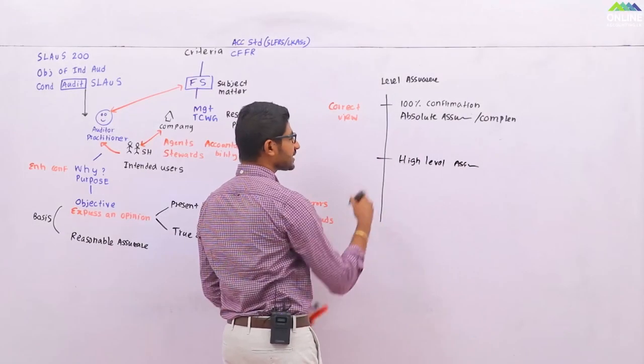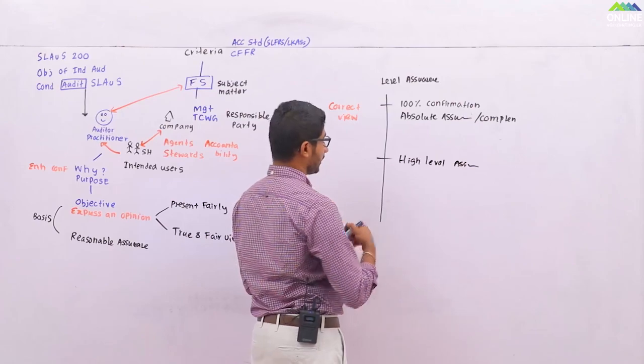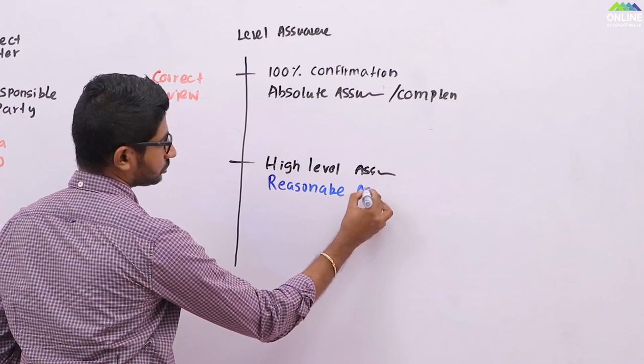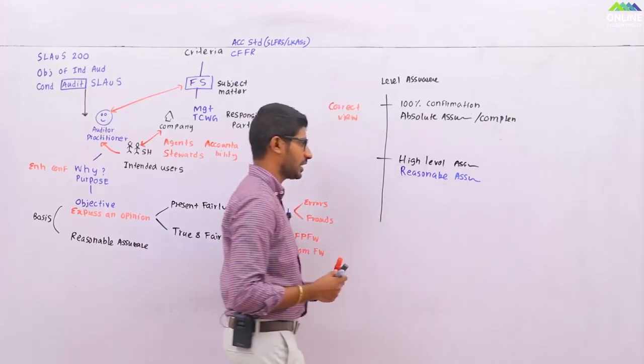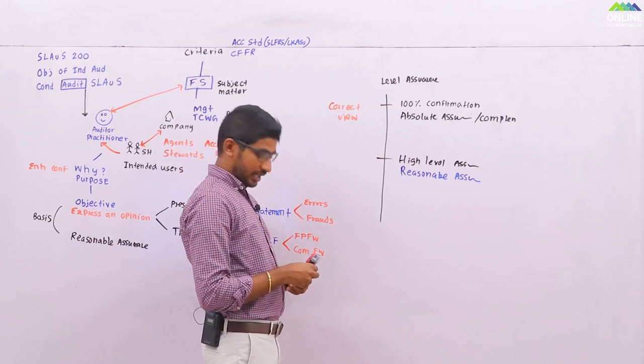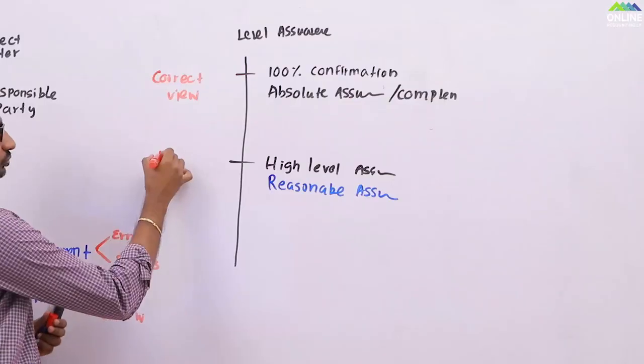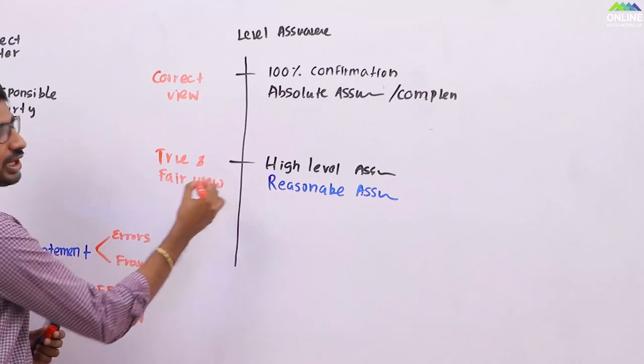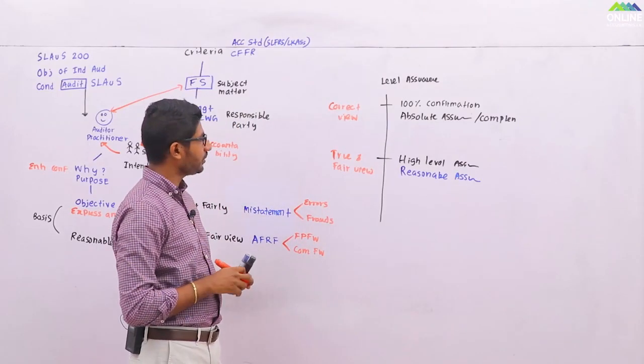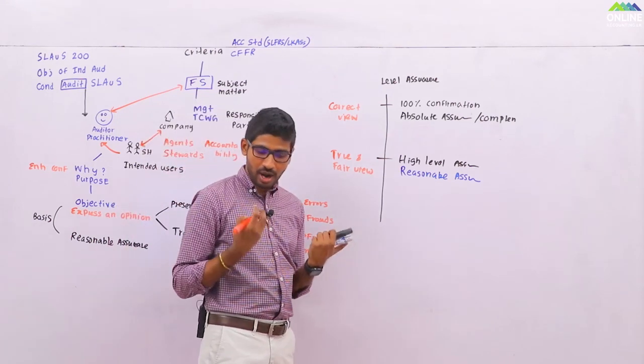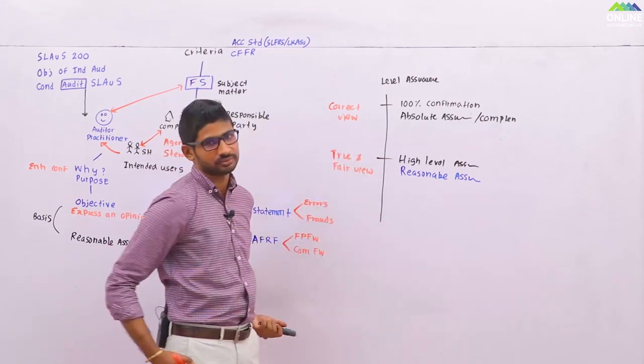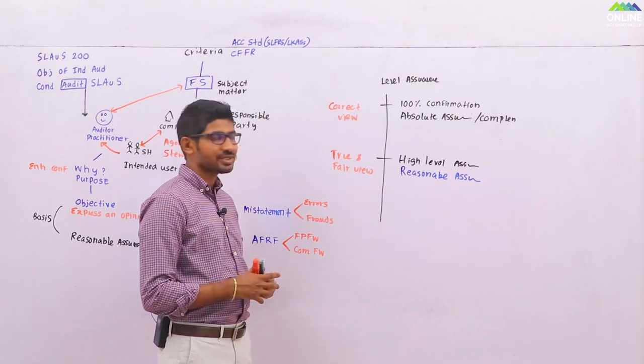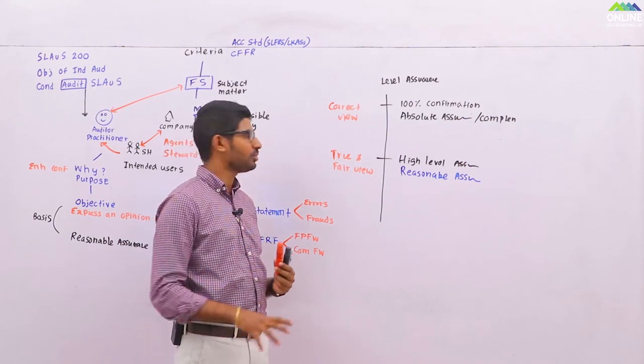Reasonable assurance. It's not confirmation, absolute assurance. It's reasonable assurance. And it says, not correct, it says true and fair view. True and fair view. So why we can't do 100% assurance? That is the problem. Why we can't say the financial statements are prepared in a way which is 100% correct?